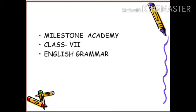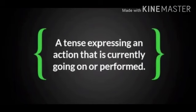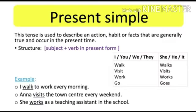Hello students, today we are going to start with English grammar chapter 7: the present tense. Present tense is a tense expressing an action that is currently going on or performed. It is further subdivided into four parts: present simple, present continuous, present perfect, and present perfect continuous tense.